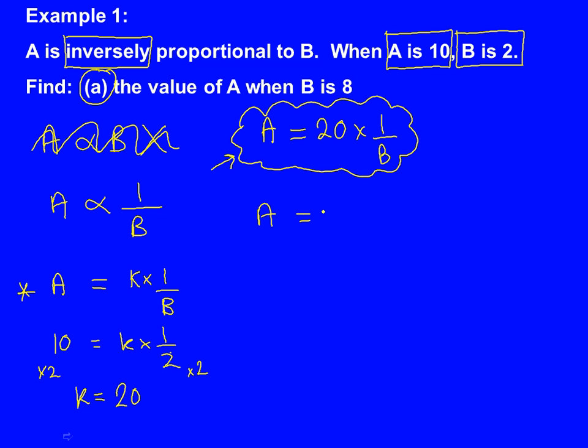So A equals 20 times 1 over 8. We can times the tops together: 20 times 1 is 20 over 8. So A equals 20 over 8. We can leave it as a fraction like that, or we can work that out as a number, which is 2.5. Both are correct.